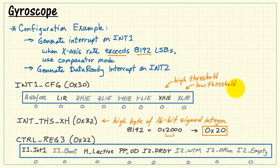Now we're looking for a high threshold and not a low threshold, and both of these are the interrupt enables.